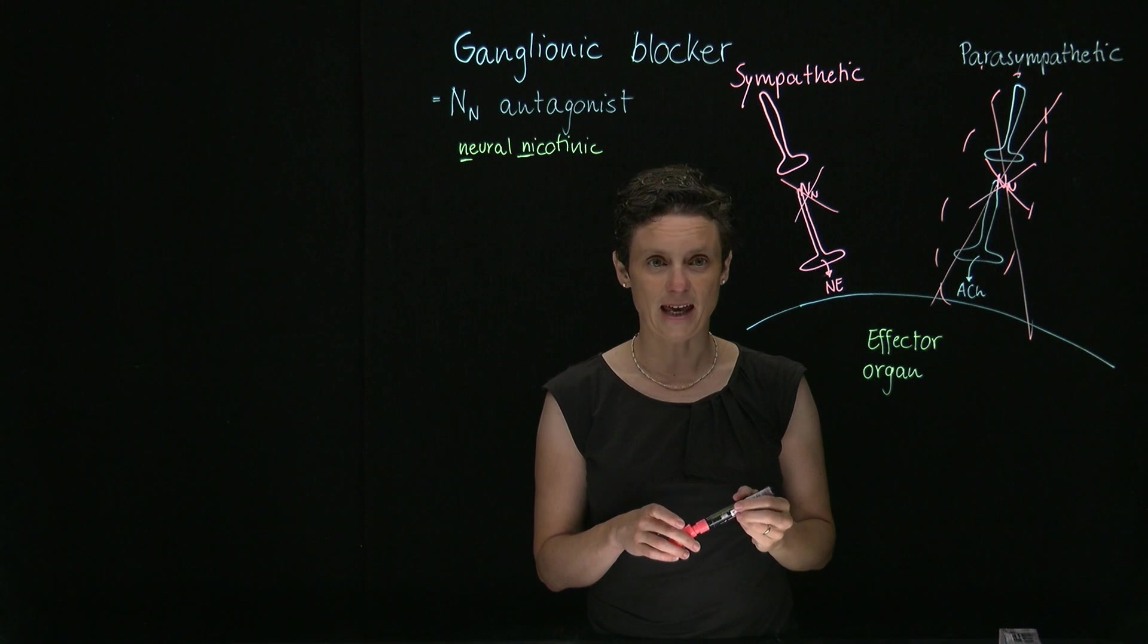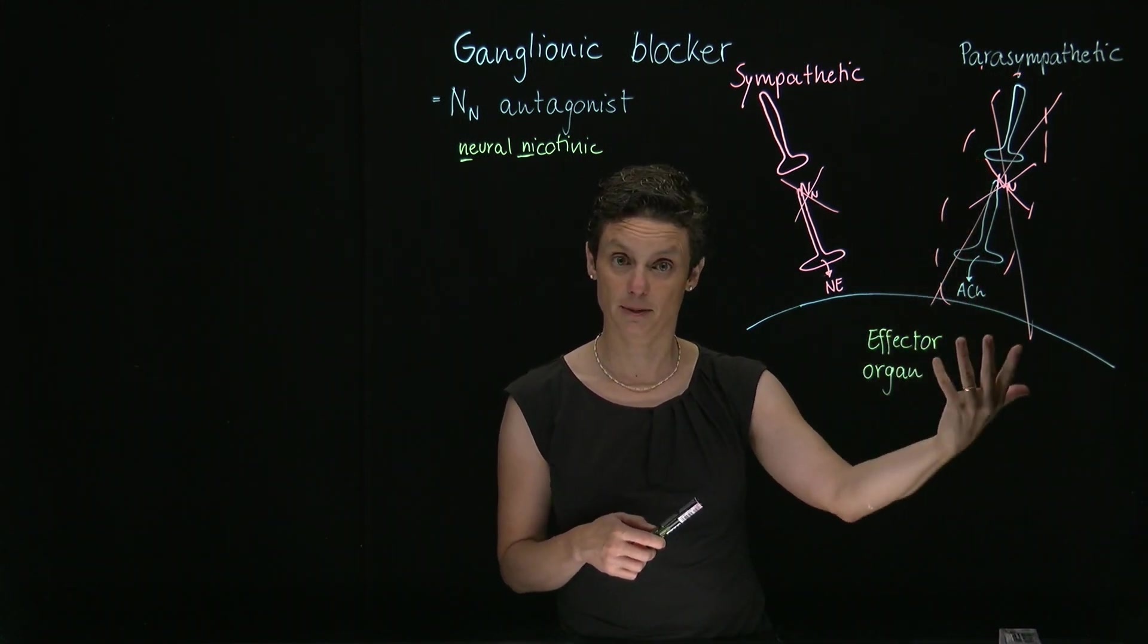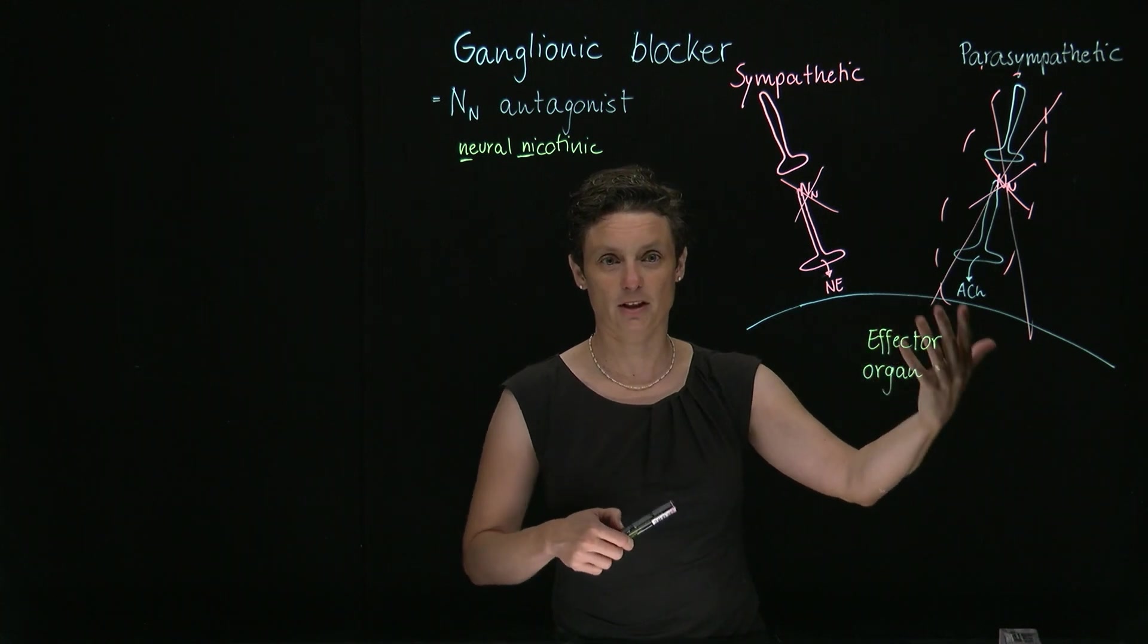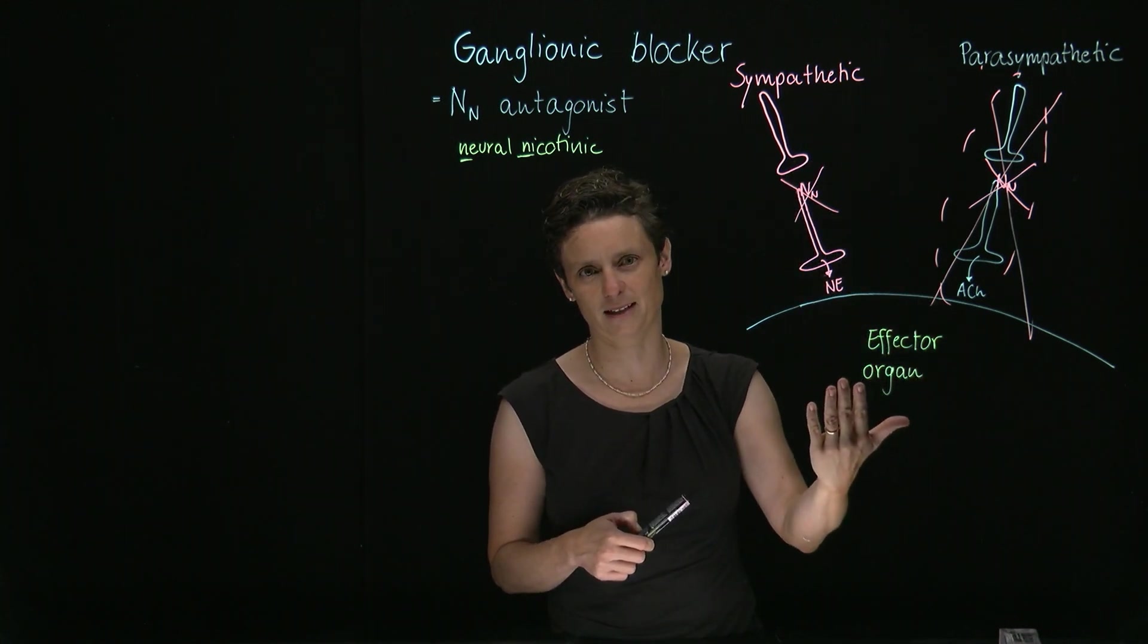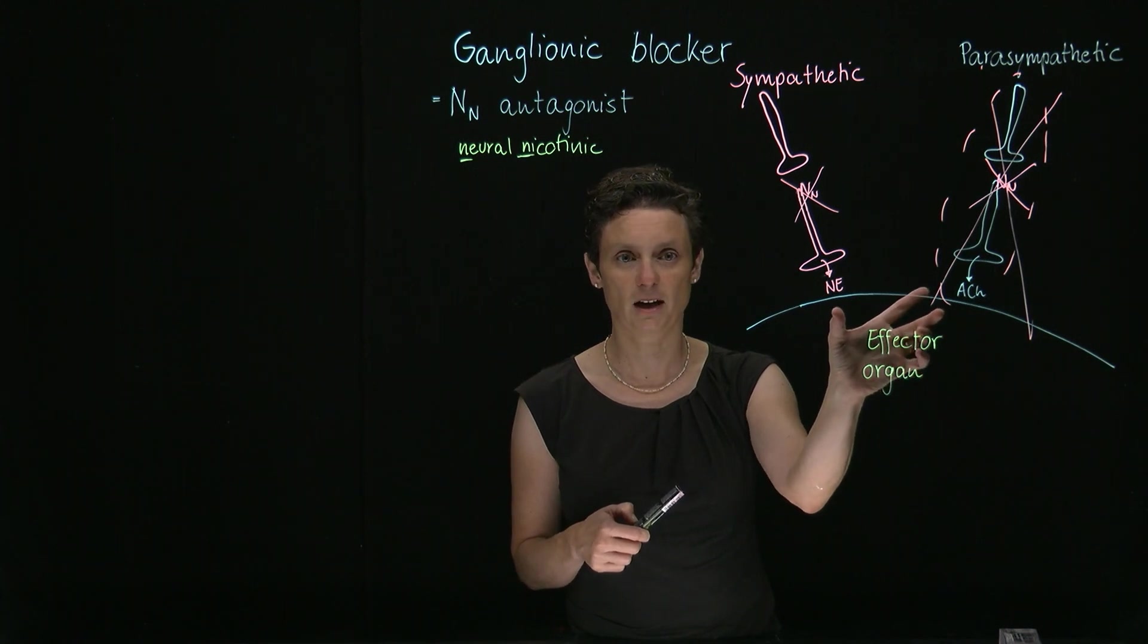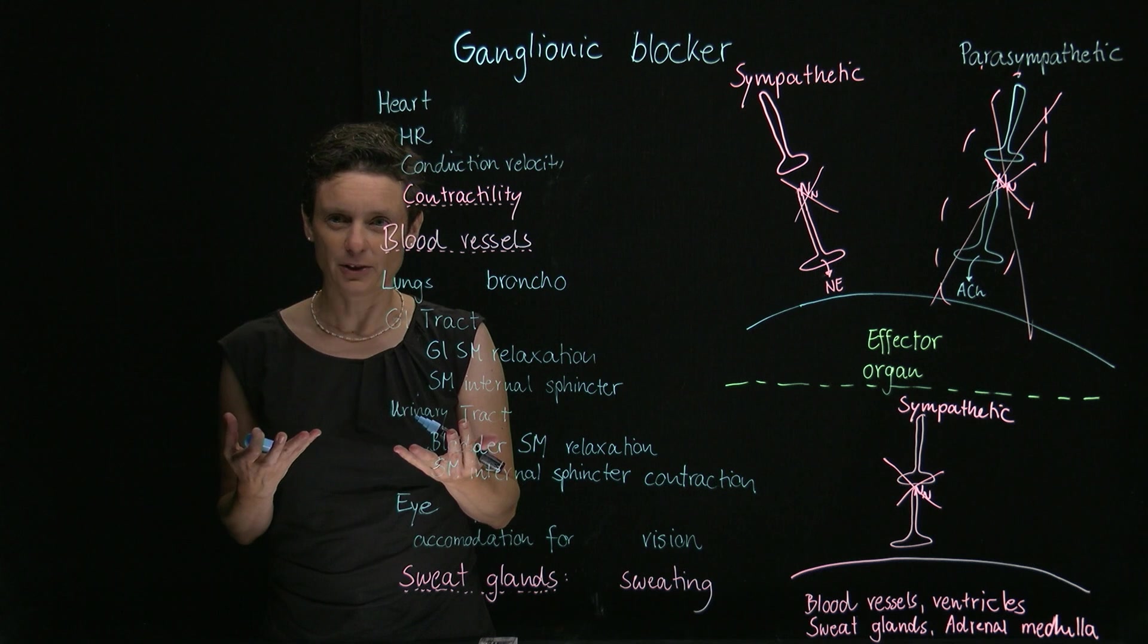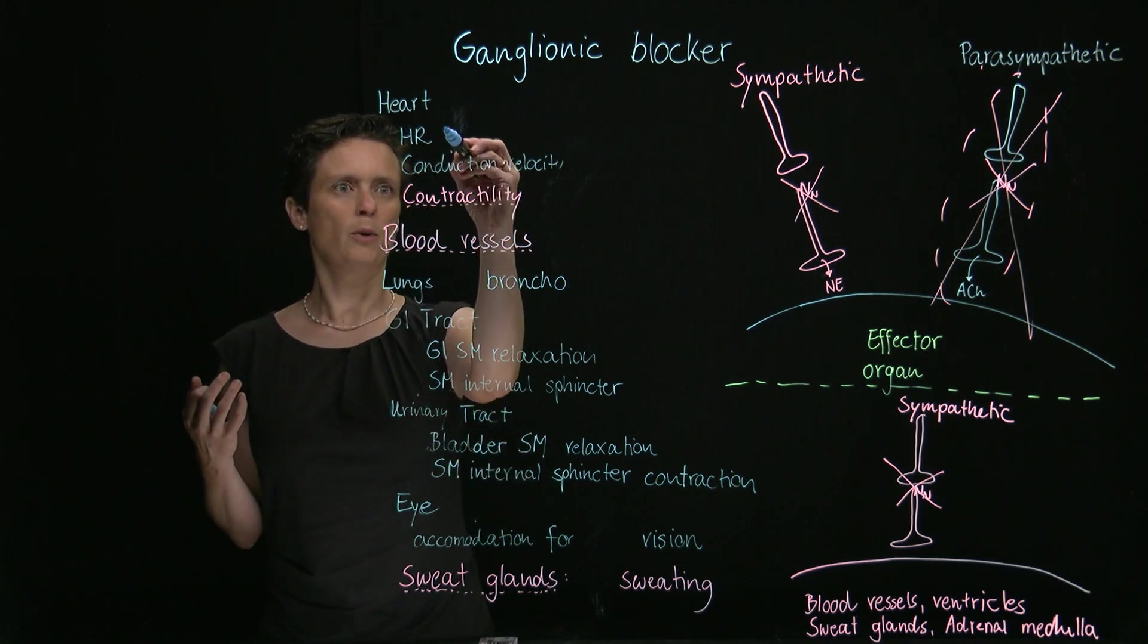The winner is always the parasympathetic. So we basically take away the dominant tone by blocking these NN receptors. Therefore, we can predict the effect by just saying, if you block this, what is going to be the opposite effect? By definition, the opposite effect is going to be sympathetic because most of the organs are under dual control. What is the sympathetic effect on the different organ systems that are under dual control?